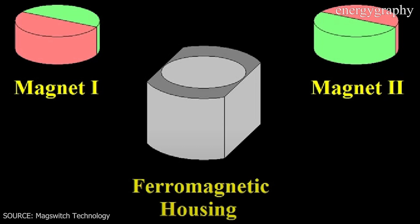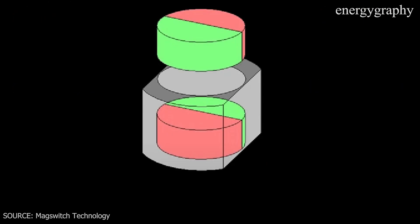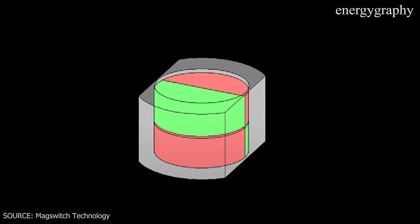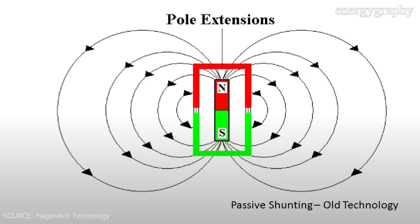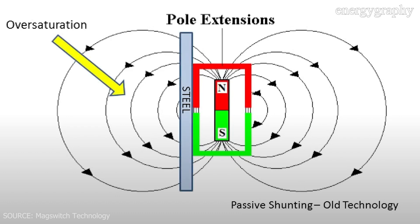Okay, there is a fascinating technology that allows us to switch a permanent magnet on and off. This innovation involves manipulating the orientation or arrangement of the magnet to control its magnetic field's strength and direction.